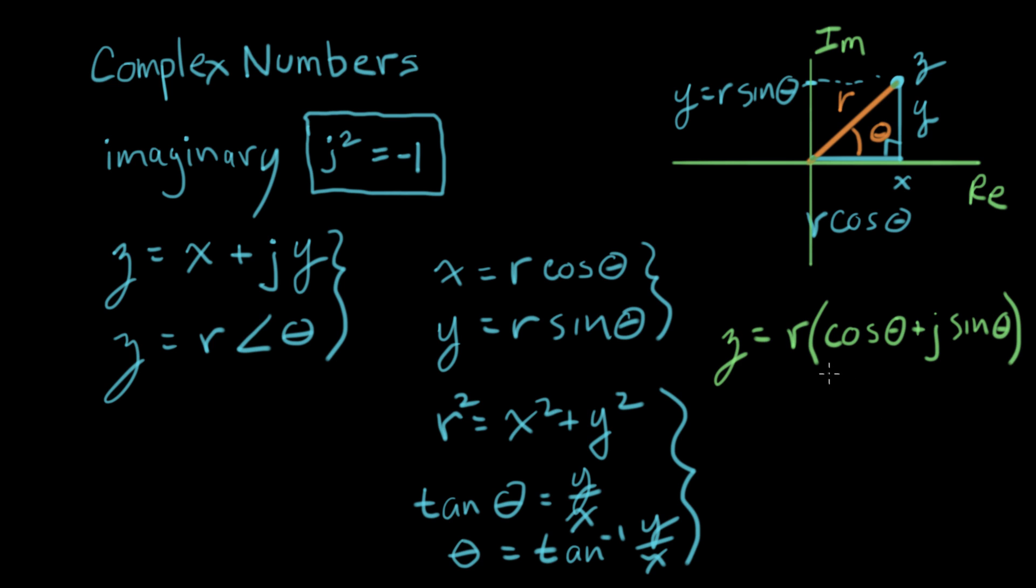Now if you look closely at this expression right here, we recognize this. We recognize this as one side of Euler's formula. And the other side of Euler's formula, I can rewrite z as r times e to the j theta. And this is called the exponential form of a complex number.